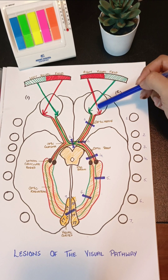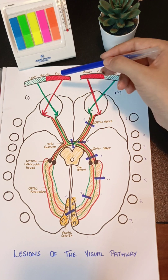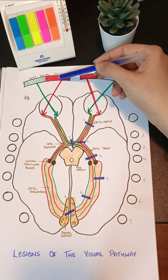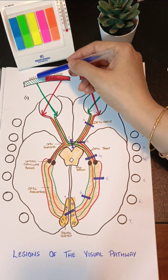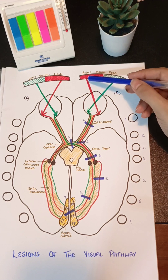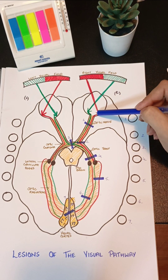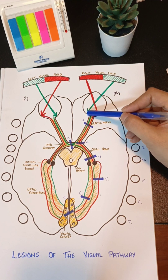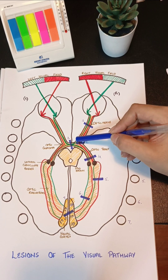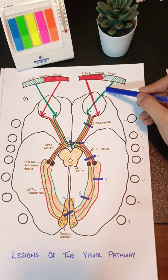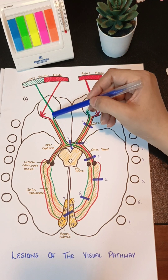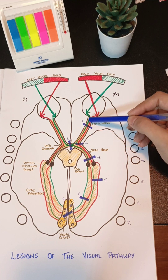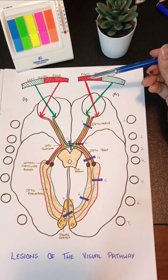Now we need to understand how the image is formed on the retina. This is the right field of vision and this is the left field of vision. The red color shows the nasal side, and the green color highlights the temporal sides. The nasal side of the field of vision falls on the temporal side of the retina, and the temporal field of vision falls on the nasal side of the retina. So the nasal fibers emerging from the nasal side of the retina actually carry the temporal field of vision, and the fibers from the temporal side of the retina carry the nasal field of vision.